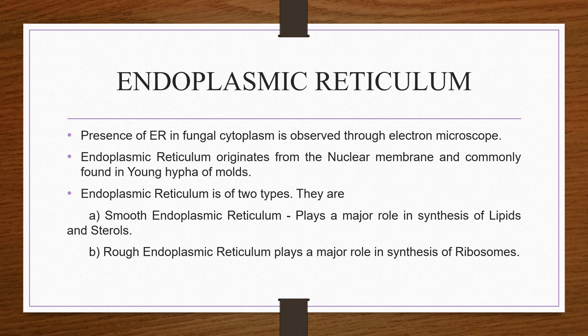Endoplasmic reticulum. The majority of fungi have a highly vesicular endoplasmic reticulum. Its presence in fungal cells is observed through an electron microscope. The endoplasmic reticulum originates from the nuclear membrane and is a packaging organelle of the eukaryotic cell. There are two types: smooth endoplasmic reticulum, which is involved in the synthesis of lipids and sterols, and rough endoplasmic reticulum, which is associated with ribosomes and protein synthesis.